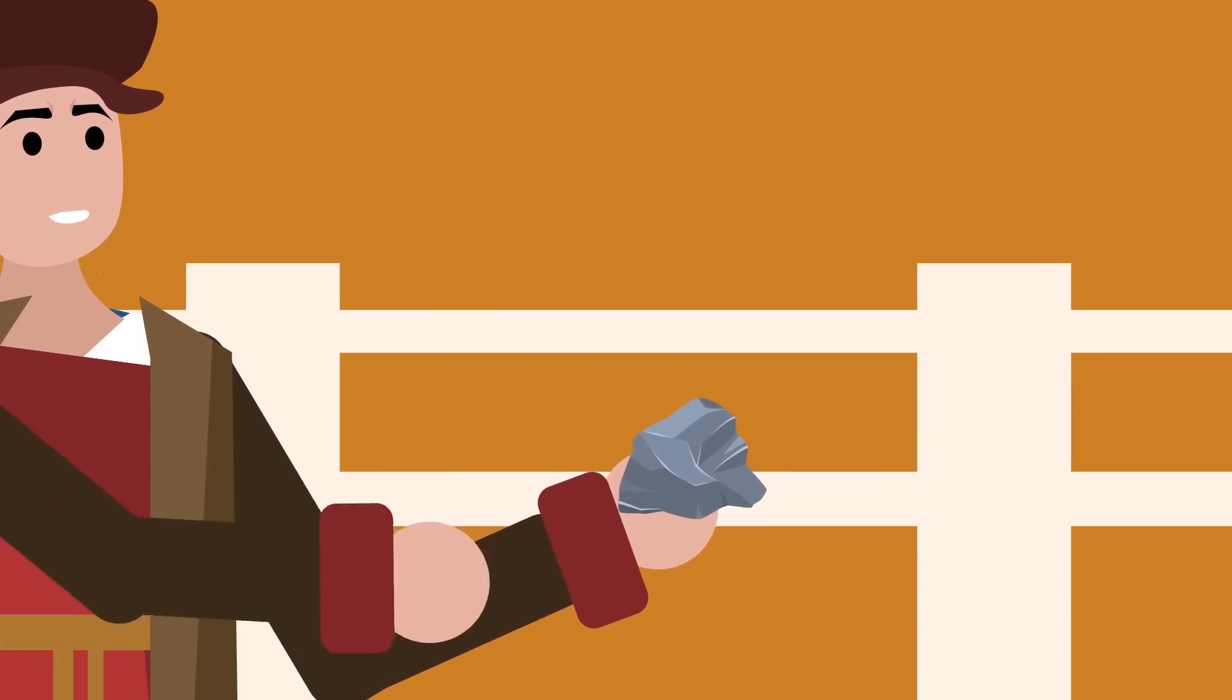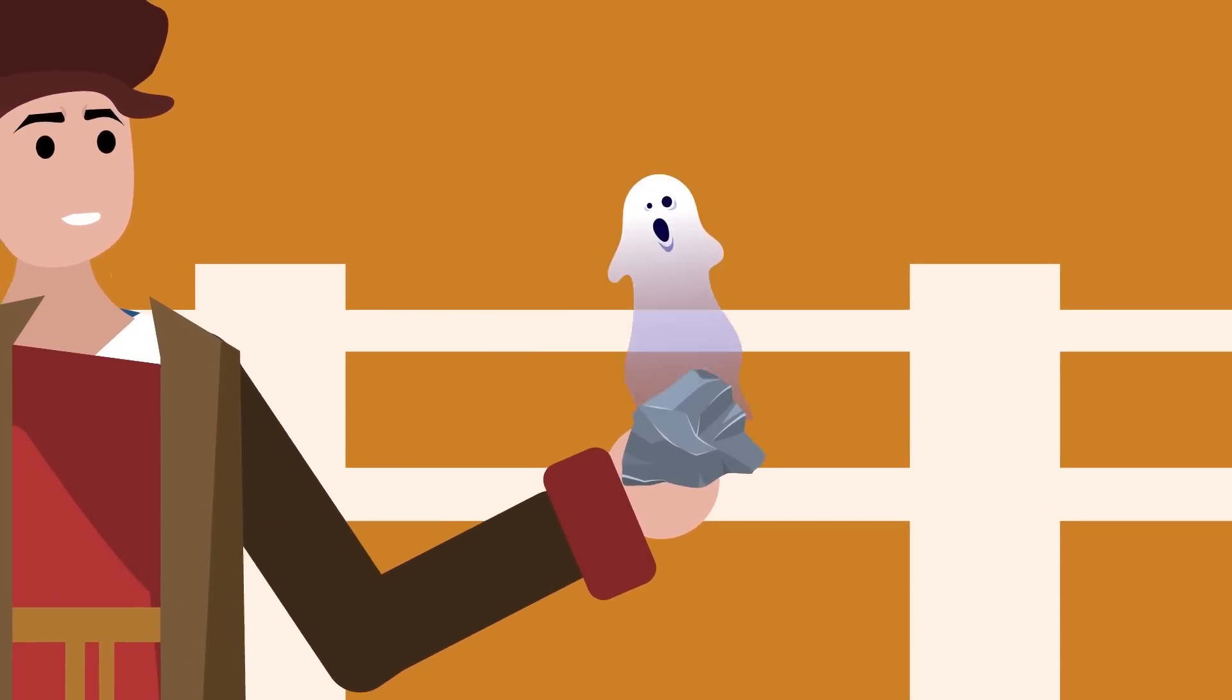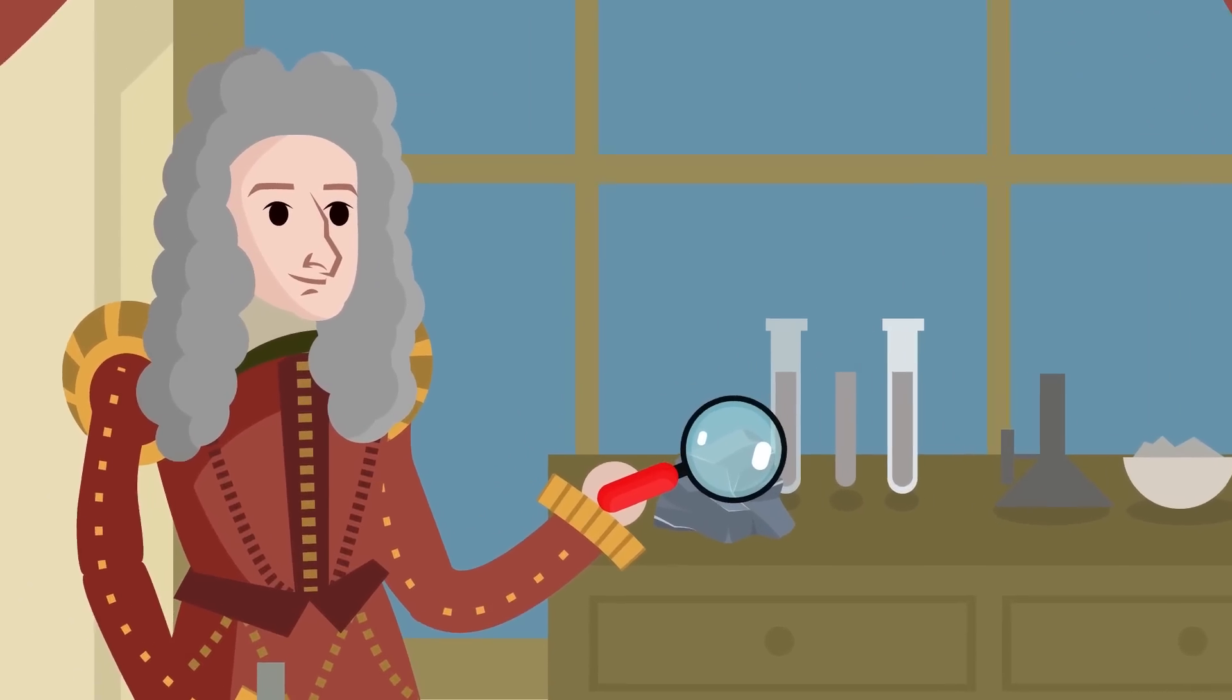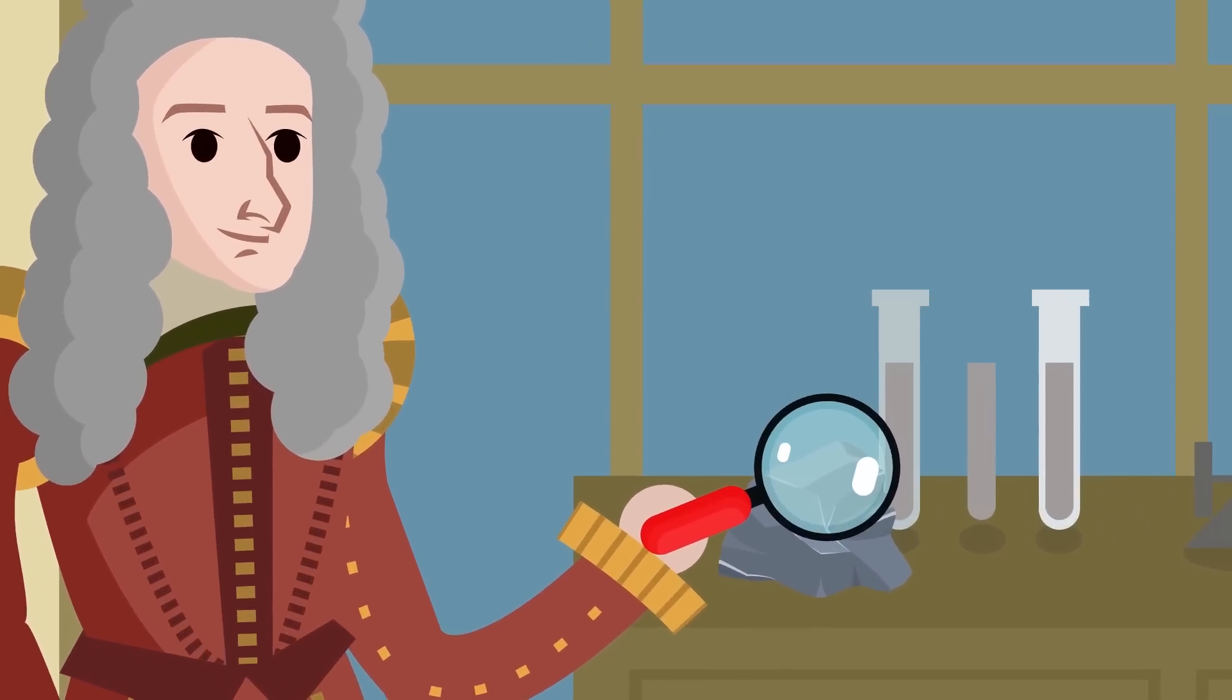They believed that everything contained some kind of universal spirit, and so something like lead just hadn't matured enough to be something precious such as gold. Even one of our greatest scientists, Isaac Newton, wrote a lot about alchemy.